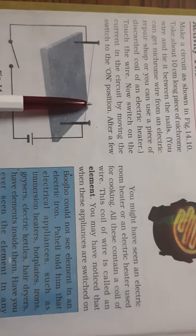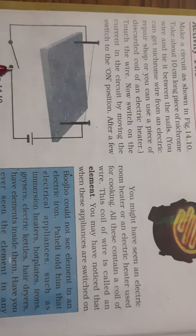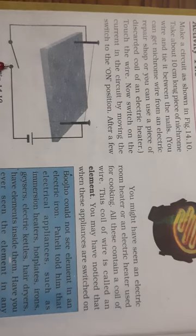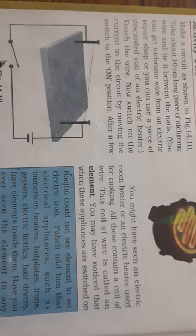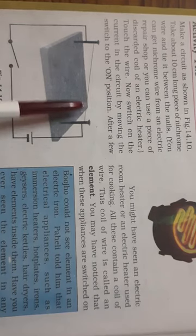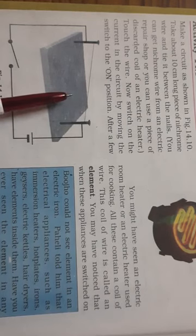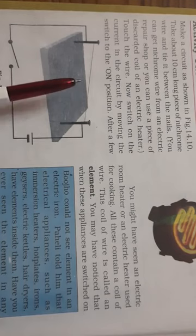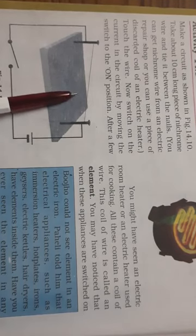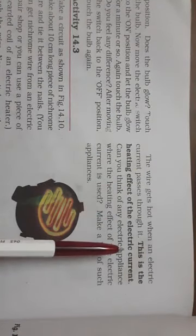Then after that what you have to do, you have to switch on the current by moving the switch to the on position. And after some time you have to again switch off the current. And then again you have to touch these wires, the nichrome wire. When you touch this wire you will see that it has become hot, and this is called heating effect of electric current.